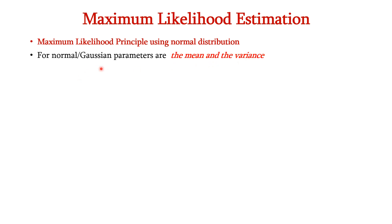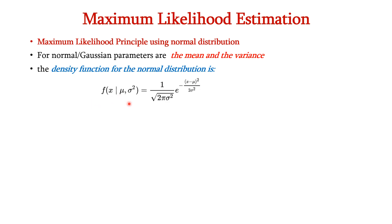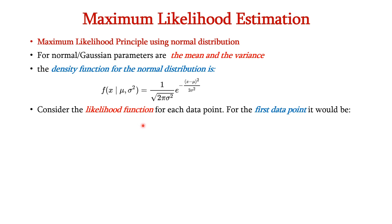Now let us see the maximum likelihood principle using the normal distribution. For normal or Gaussian distribution, the parameters are the mean and the variance. The density function for Gaussian distribution is: f(x | mu, sigma^2) = (1 / sqrt(2*pi*sigma^2)) * exp(-(x - mu)^2 / (2*sigma^2)), where x is the input data, mu is the mean, and sigma^2 is the variance — together represented as theta. Now let us consider the likelihood function for the first data point x_1. The formula is the same except x is replaced by x_1.